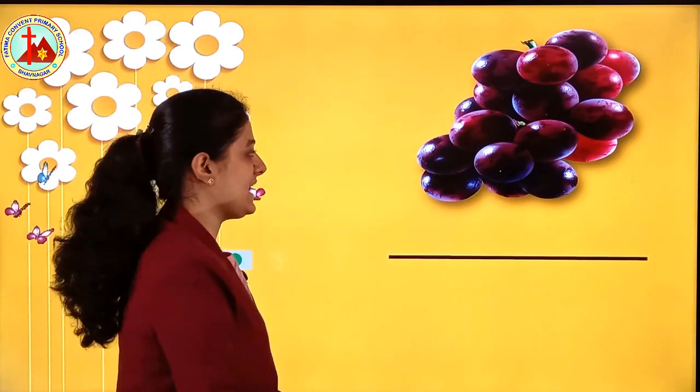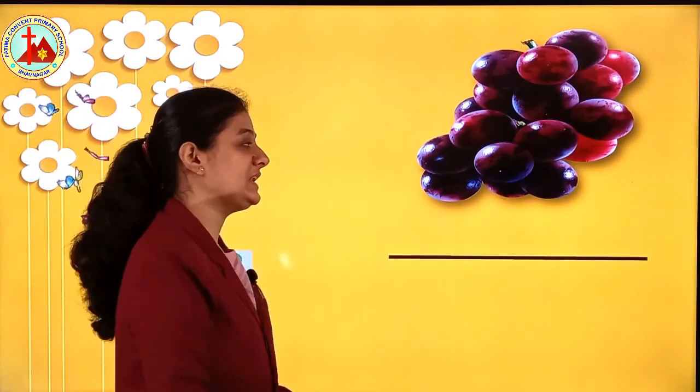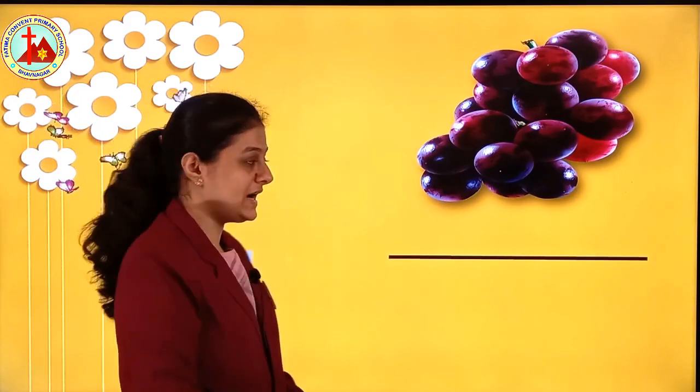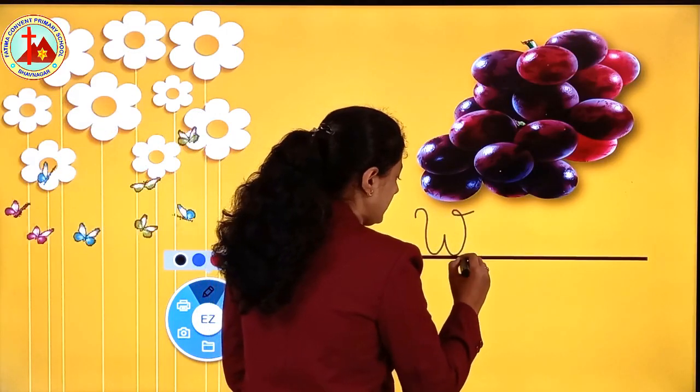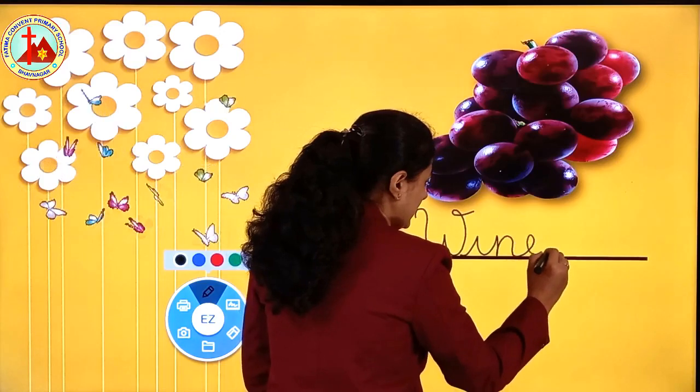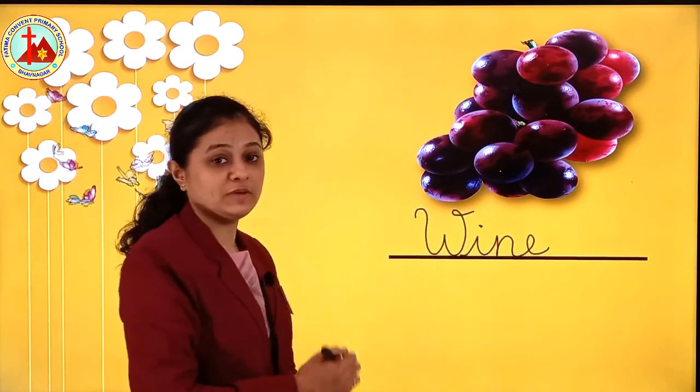Next one. Now this is a yummy delicious fruit. Which fruit is it? Grapes. Who loves to eat grapes? Even I like to eat grapes. And what do we get from grapes? The extract of grapes is known as wine. We get wine. W-I-N-E. Wine. We get wine from grapes.